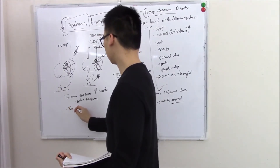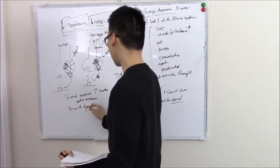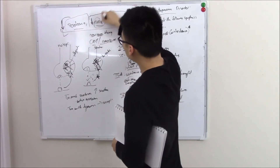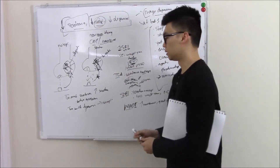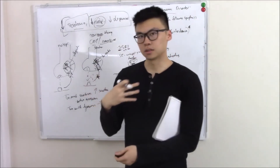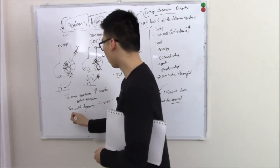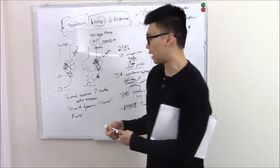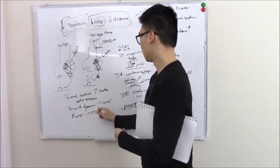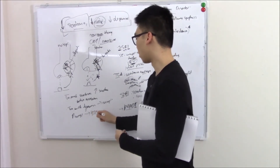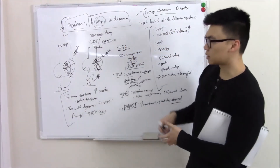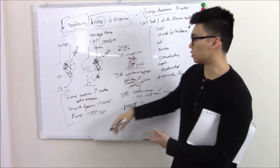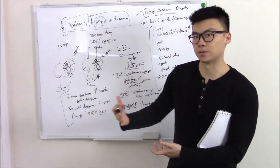Another risk with MAO inhibitors is too much tyramine. Tyramine is a precursor to norepinephrine found in foods like wine and cheeses. If you ingest those while on an MAO inhibitor, you get way too much norepinephrine, which causes vasoconstriction and can lead to hypertensive crisis. To avoid this, after stopping an MAO inhibitor you want at least two weeks for it to clear before taking serotonin-raising drugs like SSRIs or consuming tyramine-rich foods.